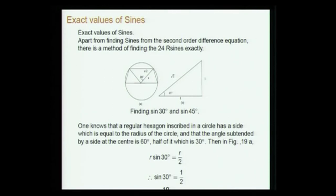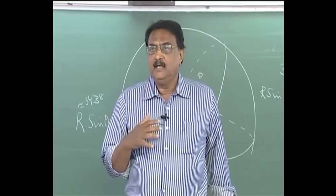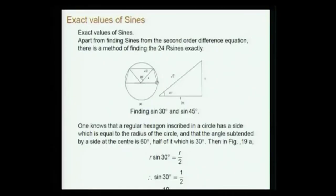That is the second-order interpolation formula for which Brahmagupta is justly famous. Apart from tables, one can find the exact values for all 24 R-sines using a geometrical method. For instance, if we inscribe a hexagon in the circle, we can see that R·sin(30°) = R/2 — the hexagon side equals R, the half-angle is 30°. Similarly, R·sin(45°) = R/√2. These values are explicitly stated in Indian mathematical and astronomical texts.